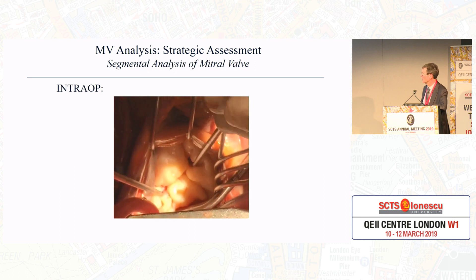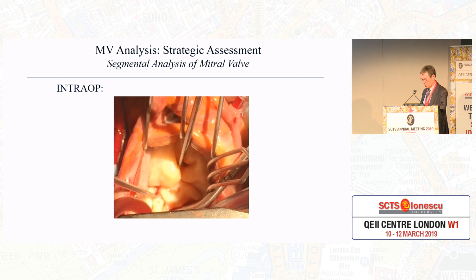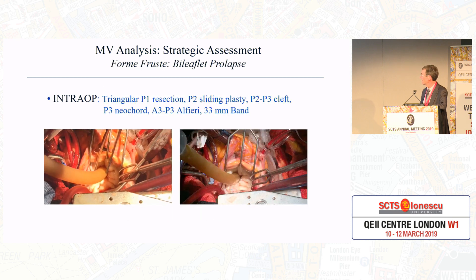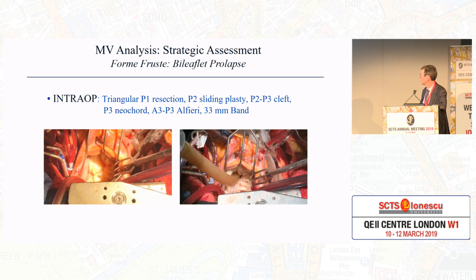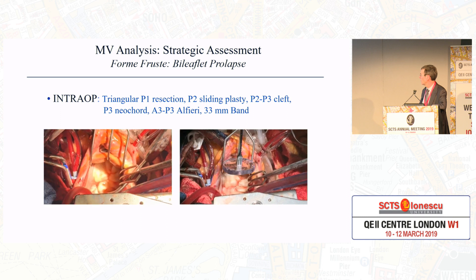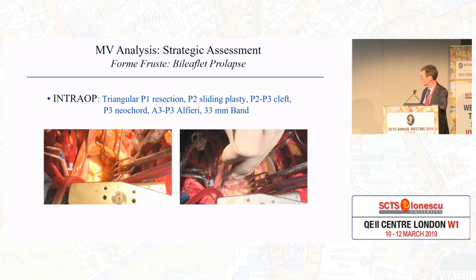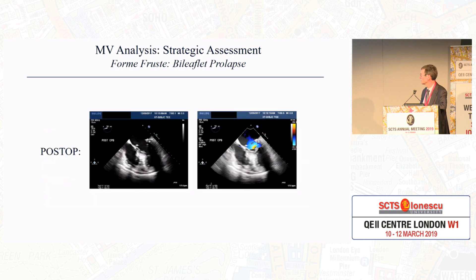Intraoperatively, we need to do a segmental analysis, looking at each segment. Here we do a triangular P1 resection — you can see the jet near P1 — and then following repair with a cord, no more regurgitation. Postoperatively, elimination of the regurgitation.